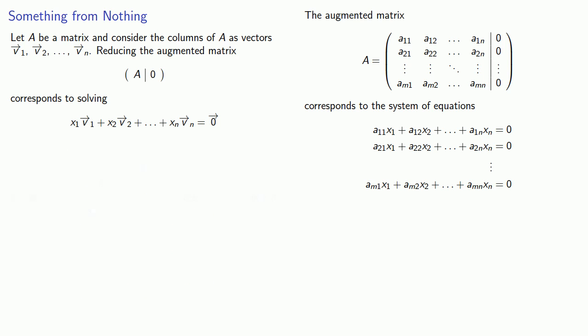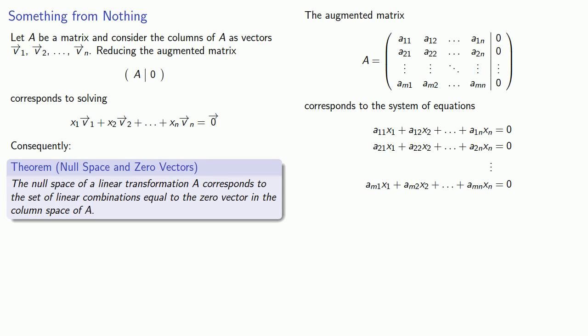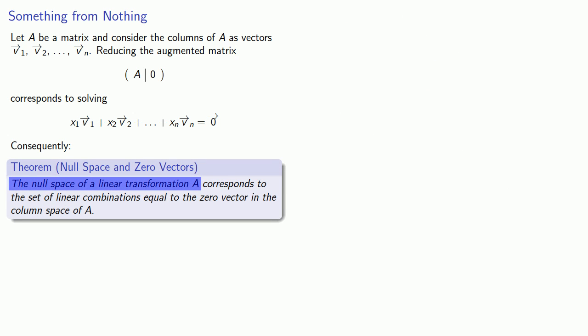Consequently, we have the following result. The null space of a linear transformation A corresponds to the set of linear combinations equal to the zero vector in the column space of A.